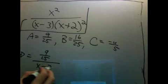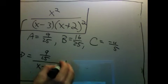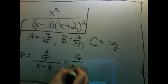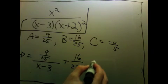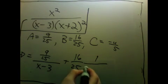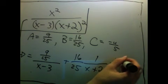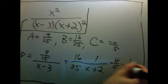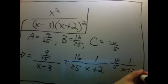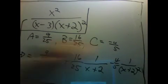So the original expression is 9 over 25 divided by x minus 3 plus 16 over 25 times 1 over x plus 2 minus 4 fifths, 1 over x plus 2 squared.